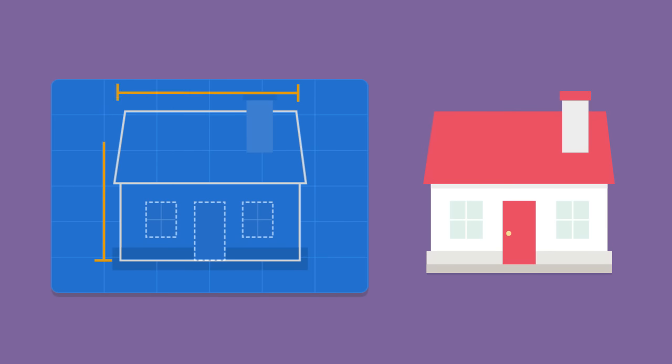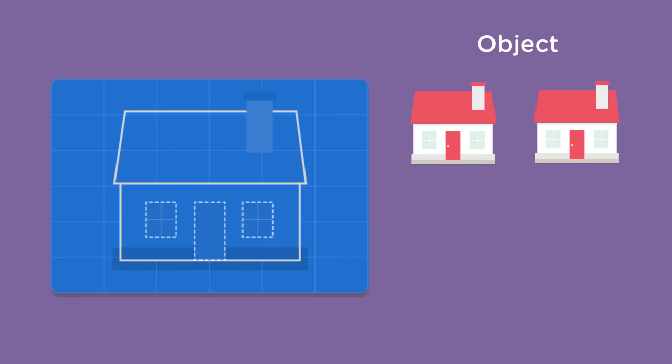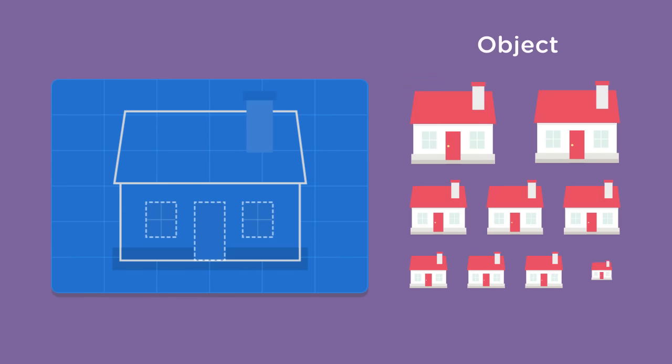is a style of coding that allows developers to group similar tasks into containers. Like a blueprint for a house that can be used to build an entire subdivision of houses, we can use object-oriented code to build multiple objects that use the same code.